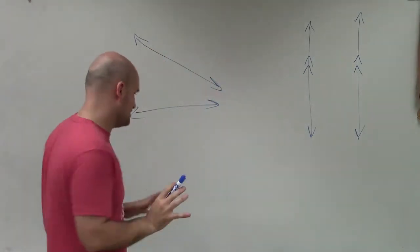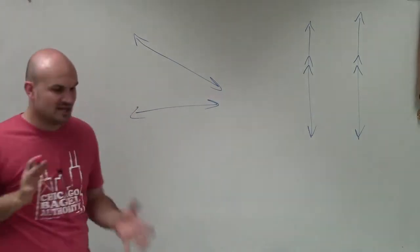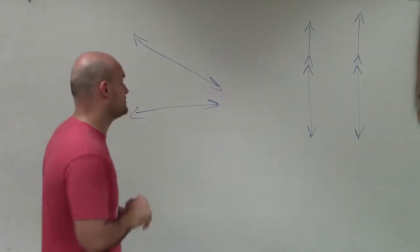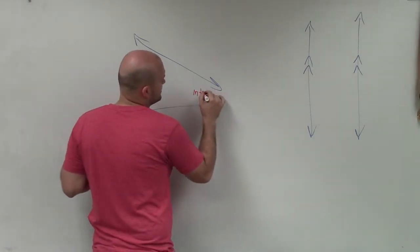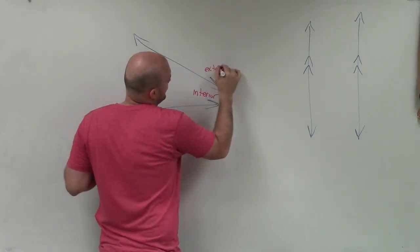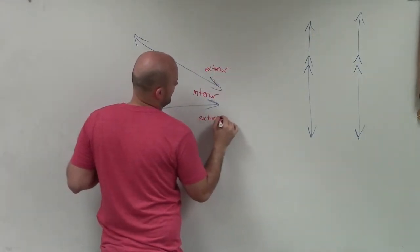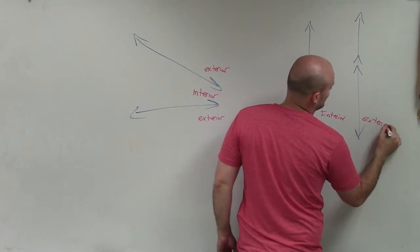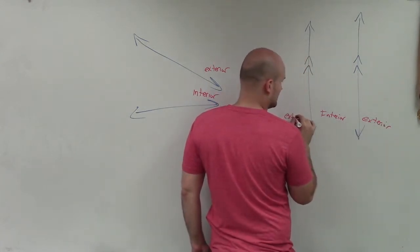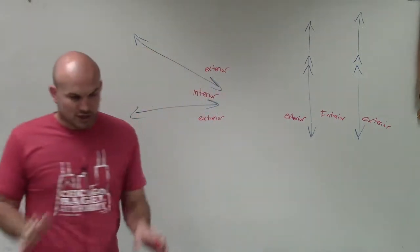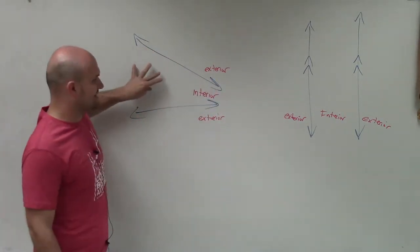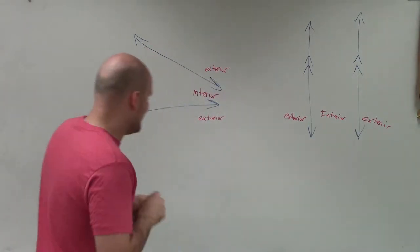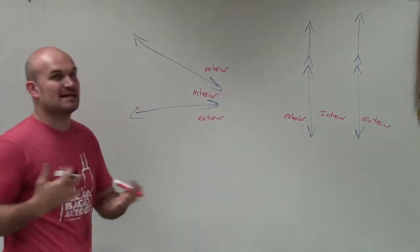Before we get into discussing the transversal, the main important thing when discussing angle relationships between two lines and a transversal is making sure we understand the difference between interior and exterior. When we're talking about two lines and a transversal, between the two lines is what we call the interior, and outside — not in between the two lines — is the exterior.